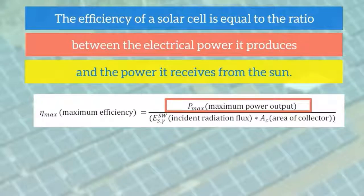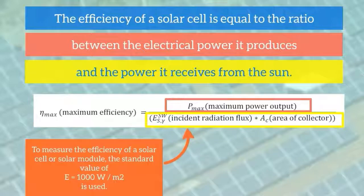To measure the efficiency of a solar cell or solar module, the standard value of E equals 1000 watts per meter squared is used. According to this definition, the smaller the area needed to produce Pmax, the higher the efficiency.